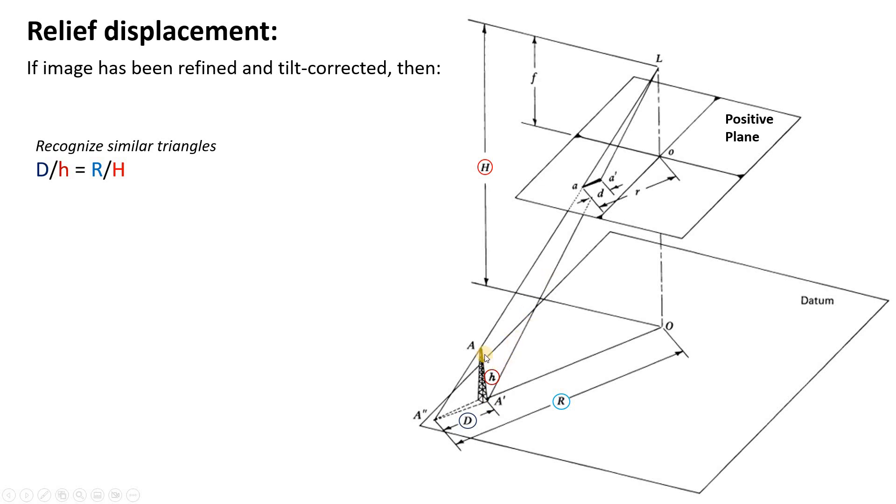Now here's the problem. Because this is a perspective image, the top of the tower at point a is mapping to little a in the image. The base of the tower at a prime is mapping to little a prime. So even though the top and bottom of the tower are in the exact same physical location, they're showing up at different points in our perspective image. So what we'd like to do is estimate this displacement d and then create an ortho rectified image in which point a is collapsed back onto a prime.